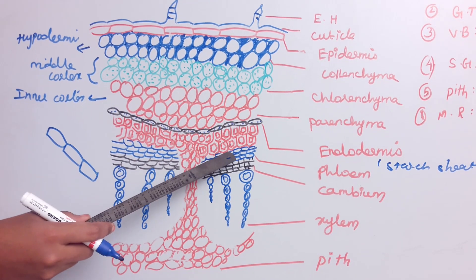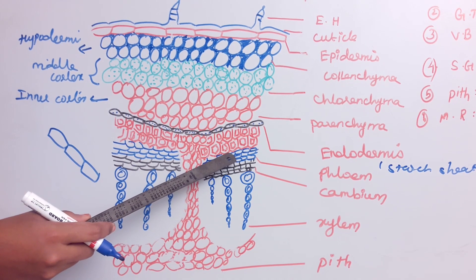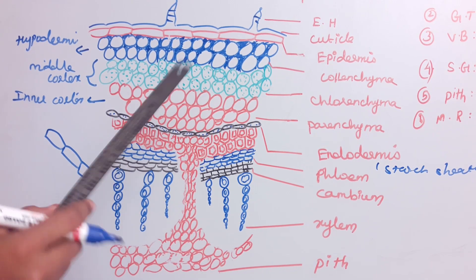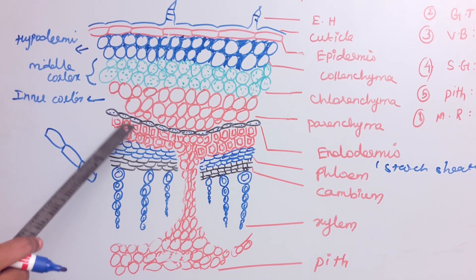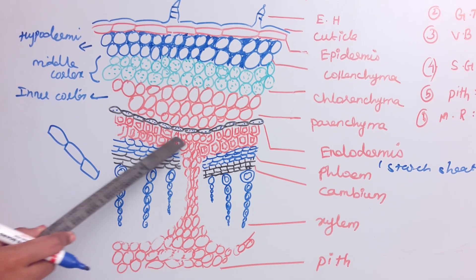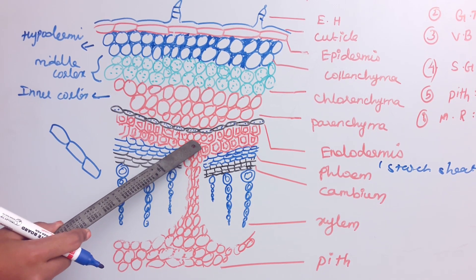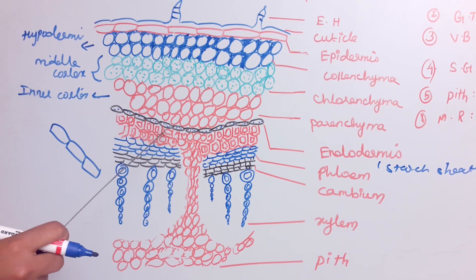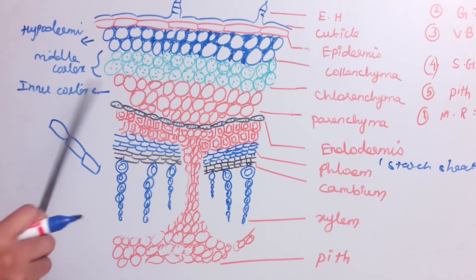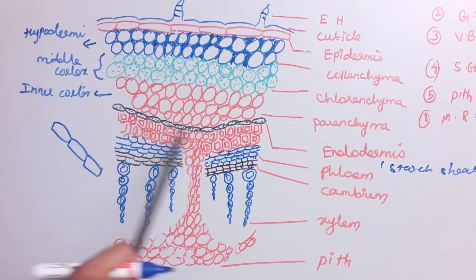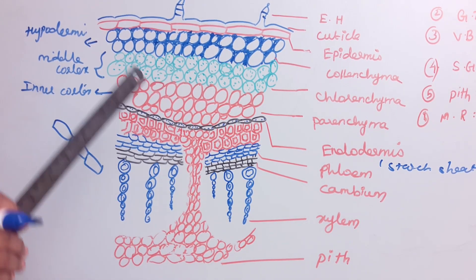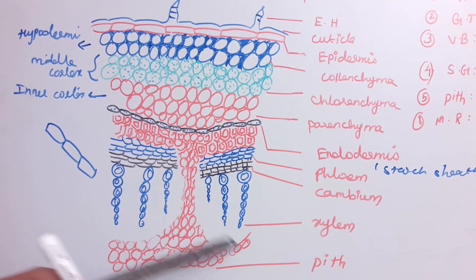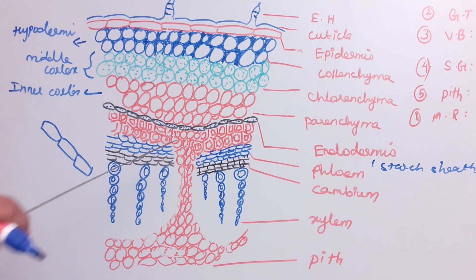Inside the endodermis is the pericycle. The pericycle is made up of sclerenchyma cells alternating with parenchyma cells — sclerenchyma and parenchyma are arranged alternately. This is the pericycle, located just inside the endodermis.